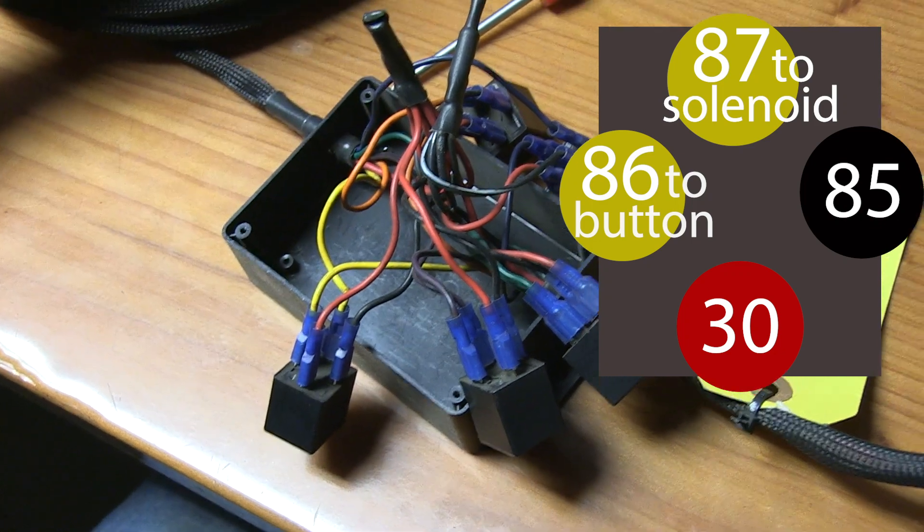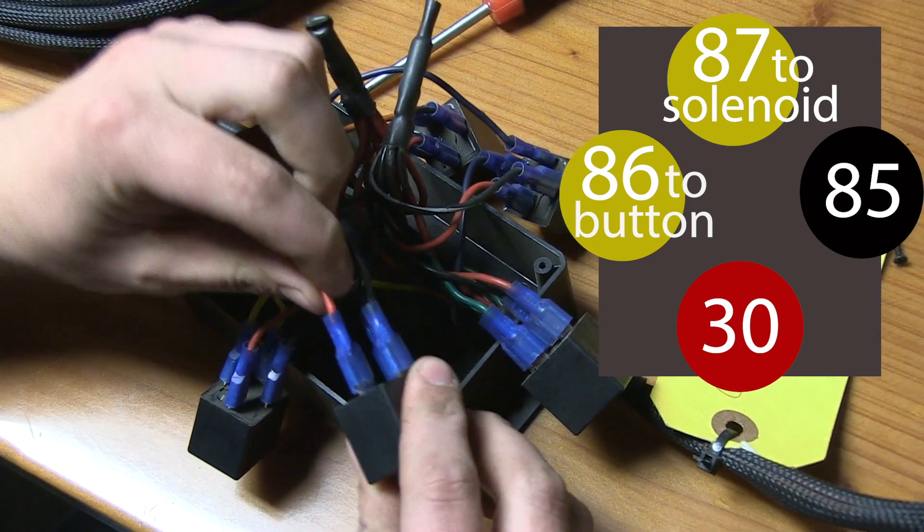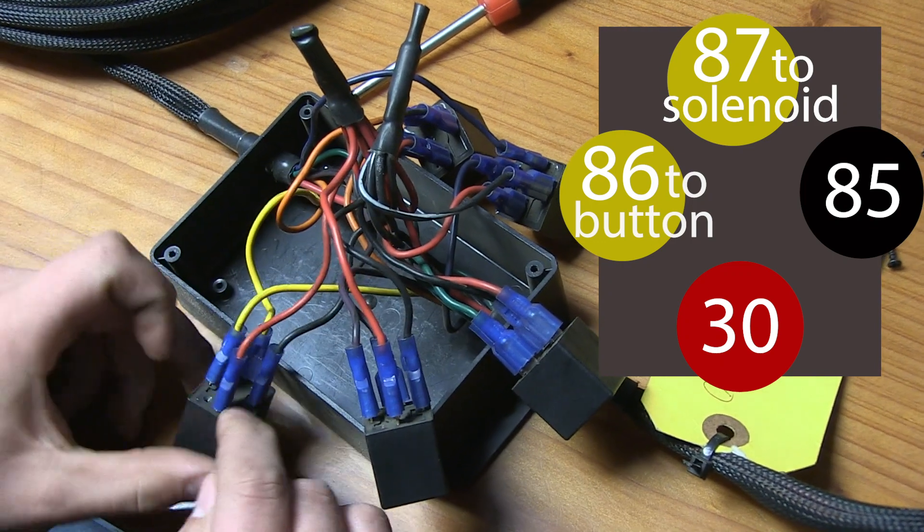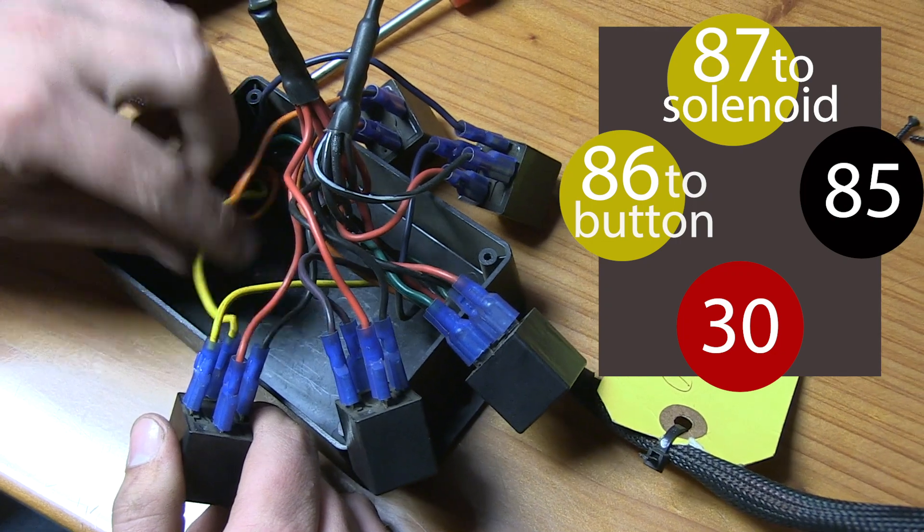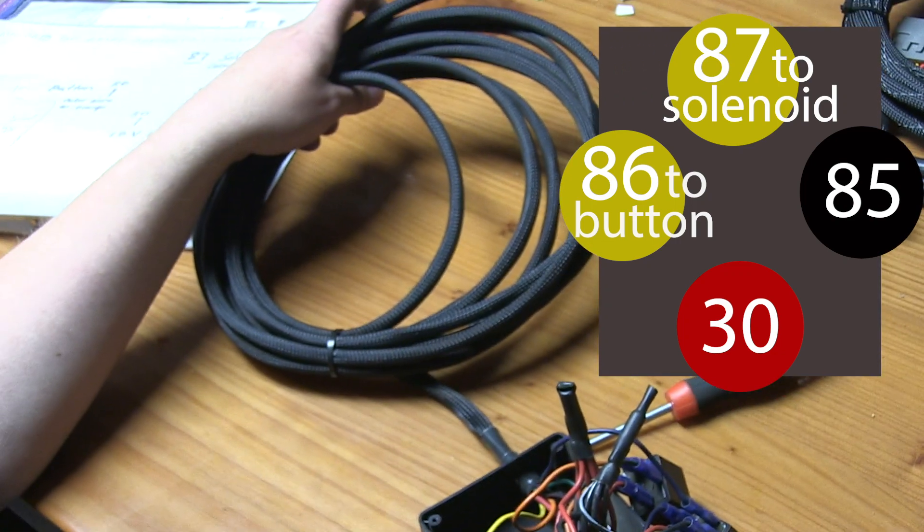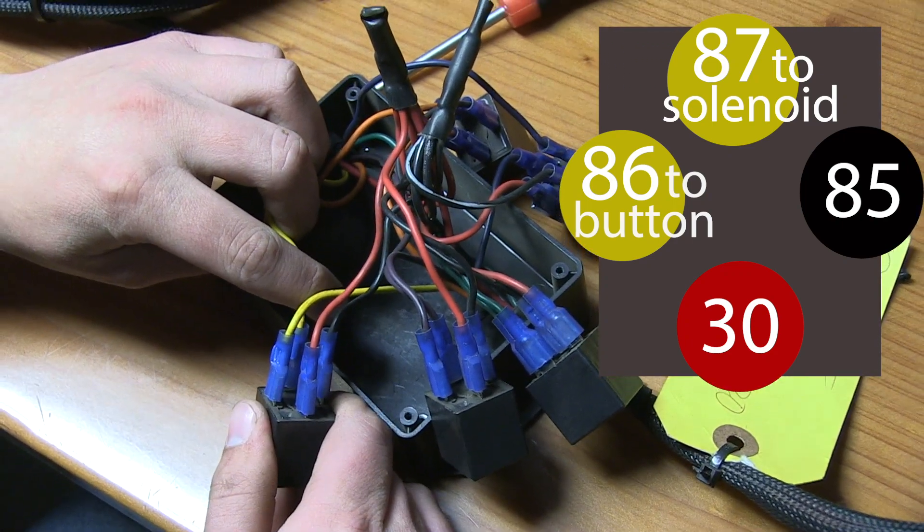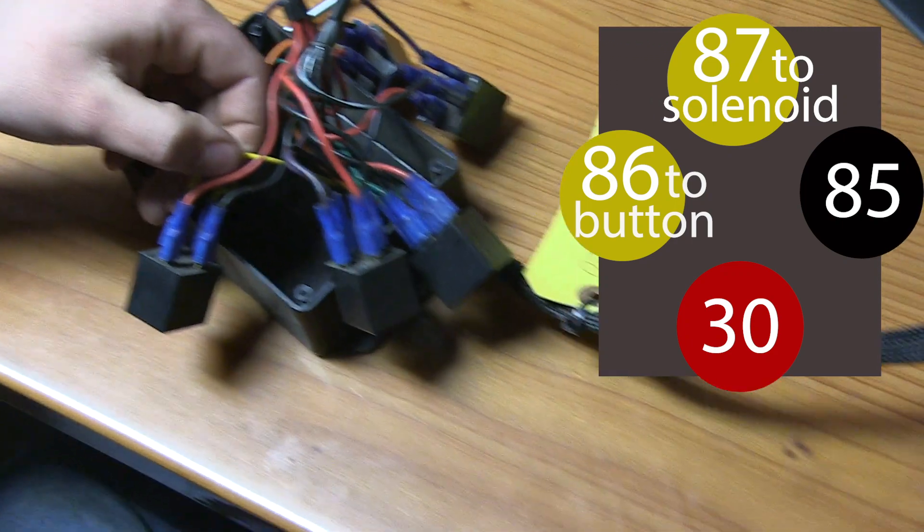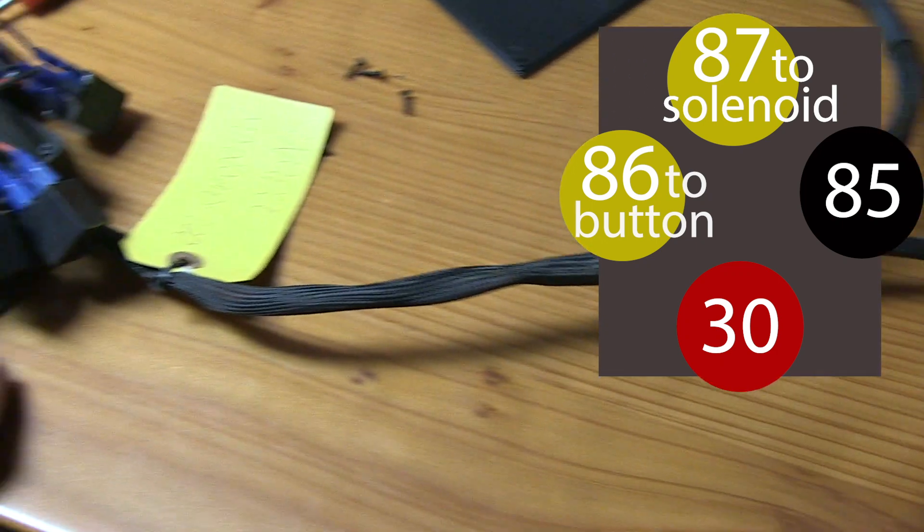And then the wiring is the same for each relay. So on every relay, red is always on 30, black is always on 85. And then the colored wire from the part of the harness that goes to the solenoid is on terminal 87. And then the colored wire that goes to the buttons is always on terminal 86.